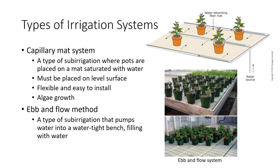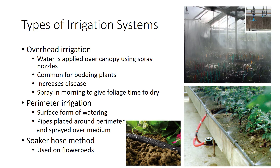The ebb and flow method is a form of sub-irrigation that pumps water into a watertight bench at regular intervals, filling the benches with water and enabling the growing medium to take up water via wick action through holes in the bottom of the pot. It is more expensive than the capillary mat system. In overhead irrigation systems, water is applied over the canopy of plants using spray nozzles. This method is commonly used on bedding plants. The problem with this method is that wet foliage increases the chances of disease. Therefore, watering should be done in the morning to give the plant foliage enough time during the day to dry.